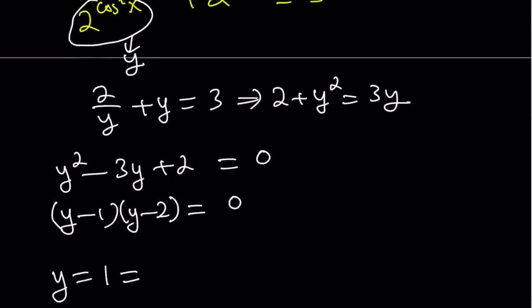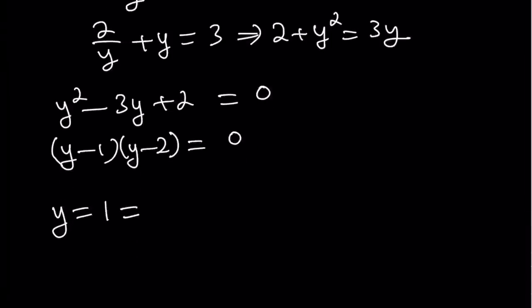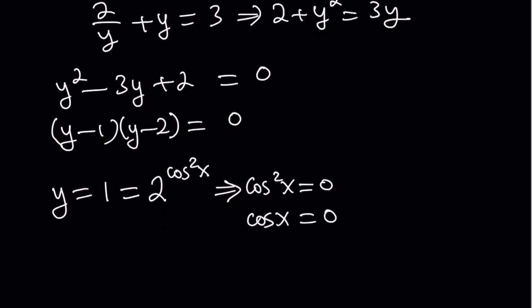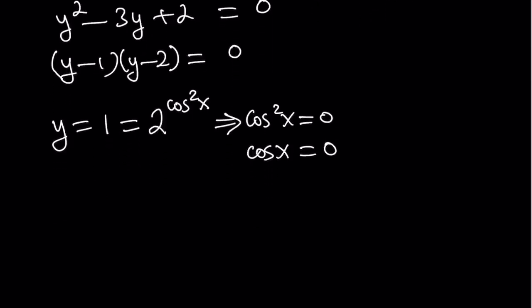Remember, y is 2 to the power cosine squared x. So let's go ahead and set it equal to 2 to the power cosine squared x. Now 2 to the power something equals 1. That implies that the exponent is 0. So from here, we get cosine squared x equals 0, which implies cosine x equals 0. Because if something squared is 0, it has to be 0. Great. Now, from here, what do we get, right? When cosine x is equal to 0,